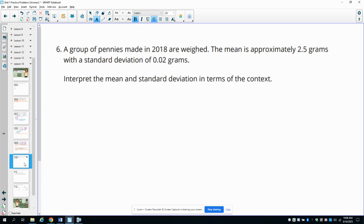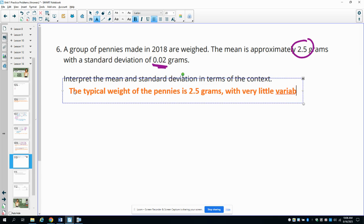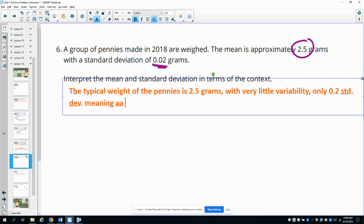Number six: A group of pennies made in 2018 are weighed. The mean is approximately 2.5 grams and the standard deviation is 0.2 grams. Interpret the mean and standard deviation in terms of this context. This says that the typical weight of the pennies is 2.5 grams with very little variability, only the 0.02 standard deviation, meaning the bulk of pennies weighed 2.5 minus 0.02, so 2.48 to 2.52 grams.